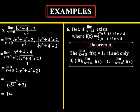Example number six asks us to determine if the limit as x approaches four exists where the equation f of x is equal to x squared minus 16 for when x is greater than four and x minus four where x is less than four.